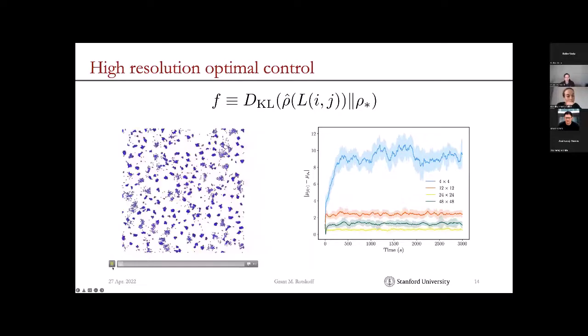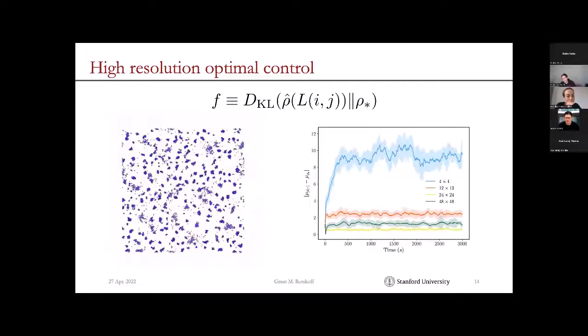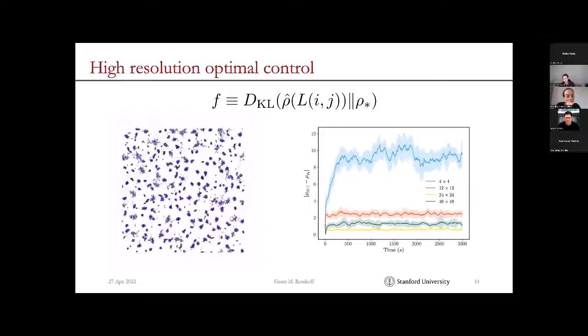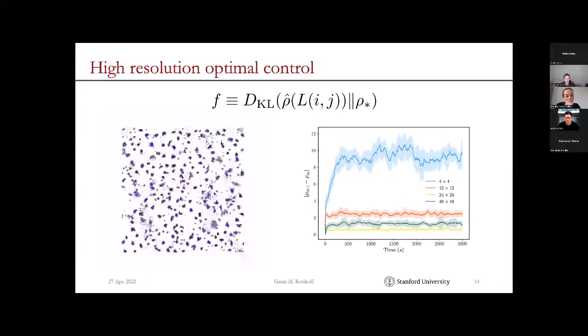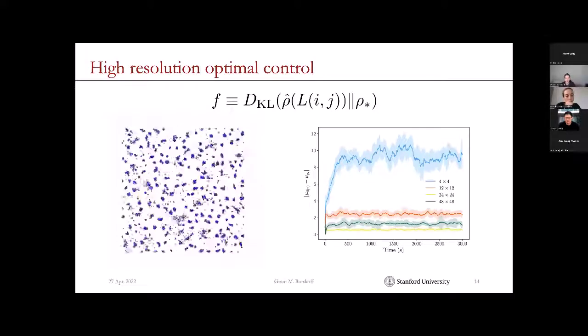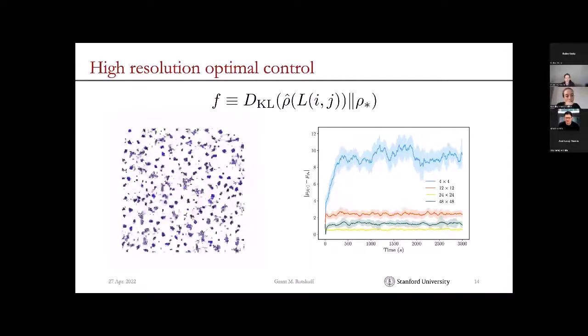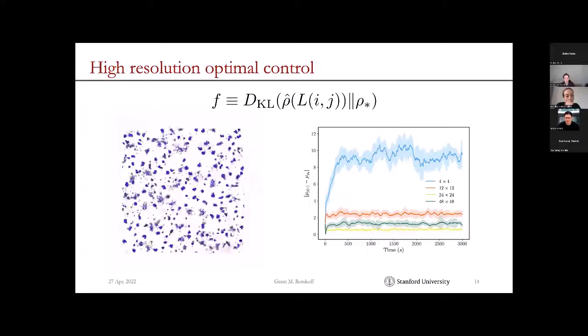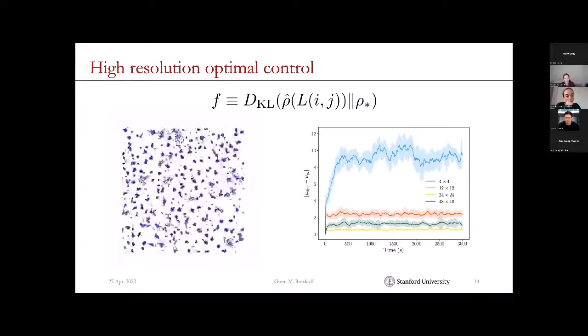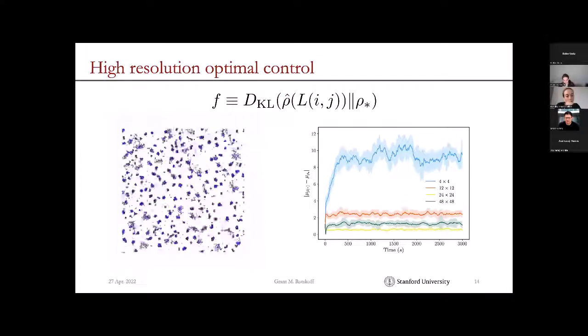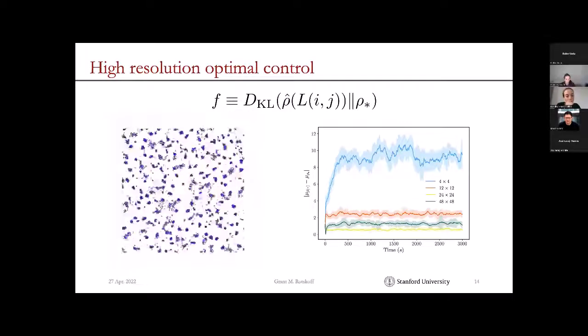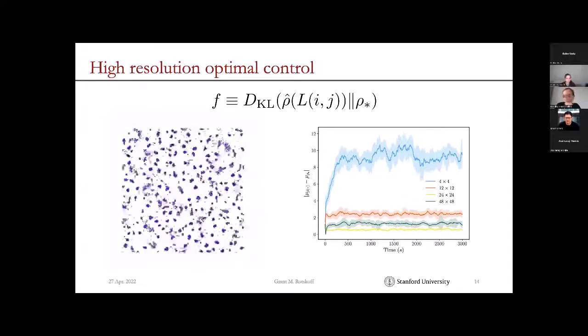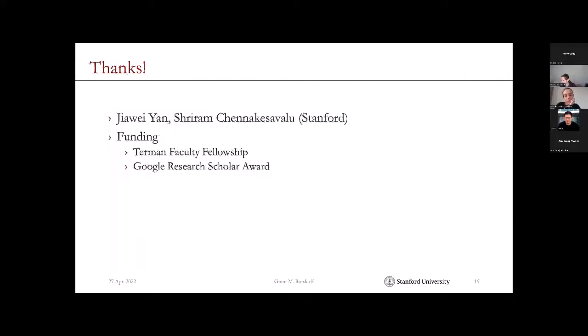This is just showing that you can do this. Of course, this can all be connected back to the cost of control through the Wasserstein distance. You can actually see a linear correspondence between the dissipation in the system and the fidelity of the control. Okay, so with that I'll conclude. Thanks for your attention and for having me.